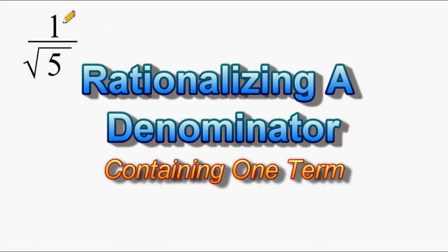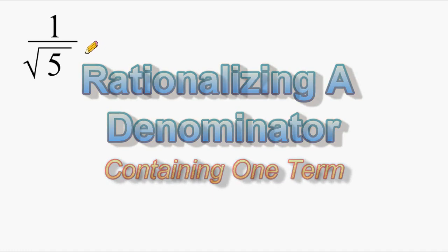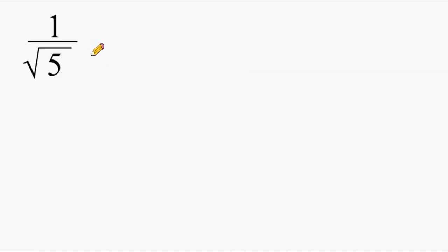What we have here is a fraction that has a denominator with a radical in it, and you are not allowed to have denominators with radicals. So what we have to do is apply a process called rationalizing the denominator. It's basically getting rid of a denominator that has a radical sign in it.